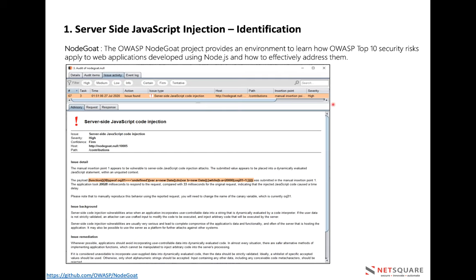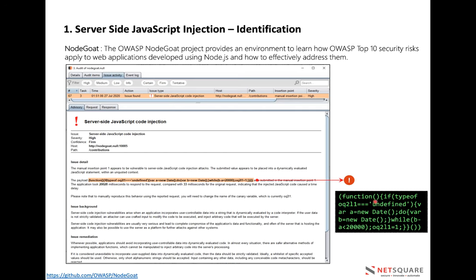The eval function executes or interprets your inputted code on the server side. For a practical example, NodeGoat is a project that provides a vulnerable application covering OWASP Top 10 security flaws. When you scan the input using Burp Scanner, Burp will inject a specific payload. If that function is placed in your input and the response takes more than 20,000 milliseconds, Burp considers it a server-side JavaScript engine.